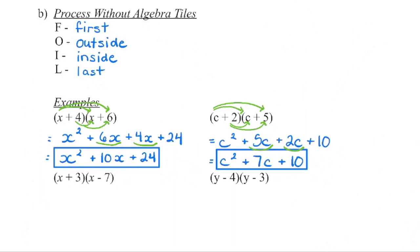Over here, again we do first terms: c times c is c squared. Outside: c times 5 is 5c. Inside: 2 times c is 2c. And the last term: 2 times 5 is 10. Check for like terms — 5c plus 2c gives us 7c. So our simplified answer is c squared plus 7c plus 10.